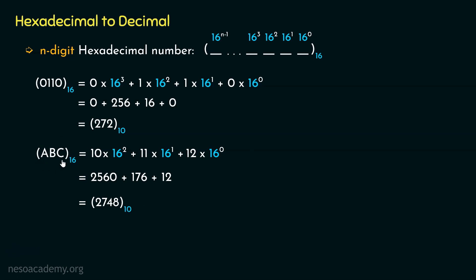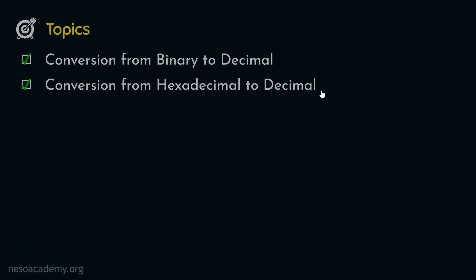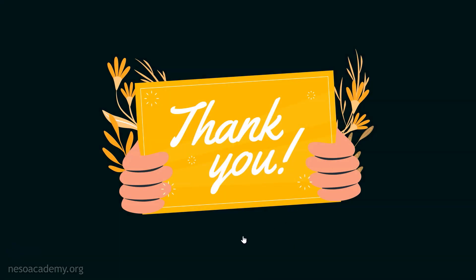Remember: whenever we deal with hexadecimal symbols that are not from 0–9, we must first convert them to their familiar decimal equivalents before proceeding. That's all about how hexadecimal numbers can be converted into decimal numbers. In this session we covered conversion from binary to decimal and from hexadecimal to decimal. In the next session we will learn about conversion from the decimal number system. Thank you all for watching.